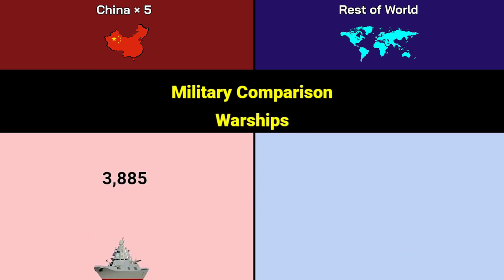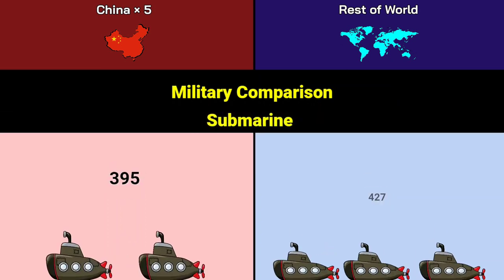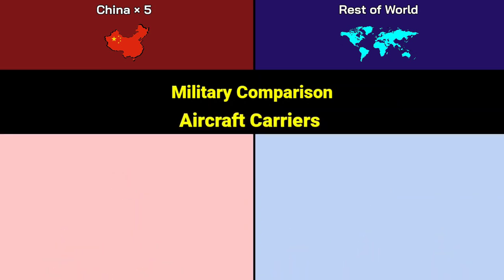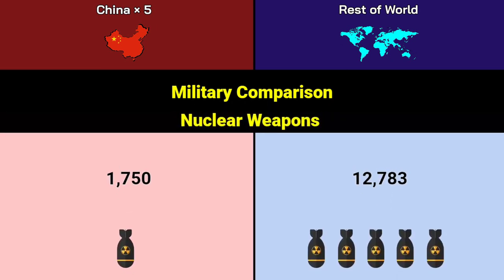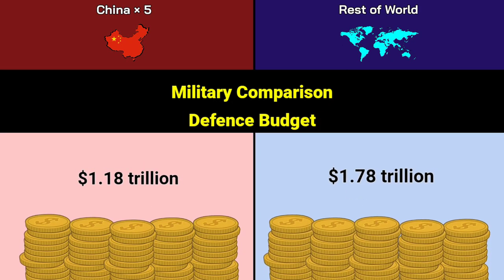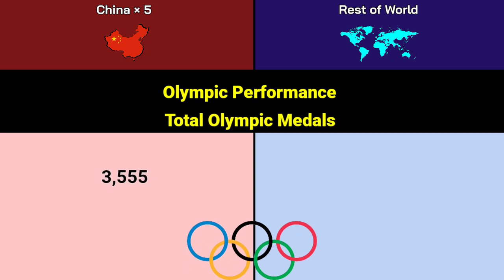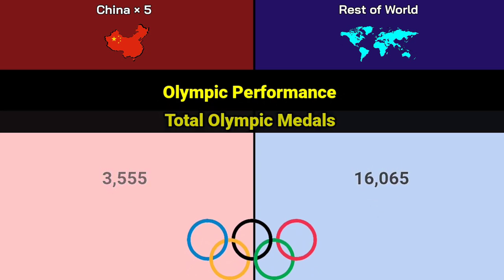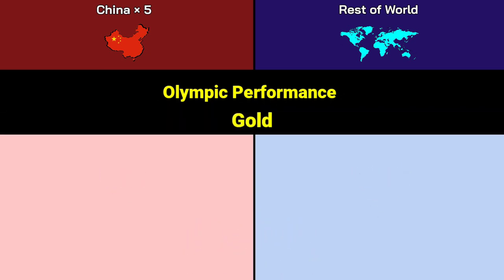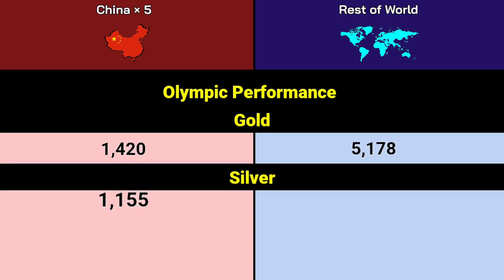Warships: China 3,885, Rest of World 8,369. Submarines: China 395, Rest of World 427. Aircraft carriers: China 10, Rest of World 19. Nuclear weapons: China 1,750, Rest of World 12,783. Defense budget: China 1.18 trillion dollars, Rest of World 1.78 trillion dollars. Olympic performance — total medals: China 3,555, Rest of World 16,065. Gold: China 1,420, Rest of World 5,178. Silver: China 1,155, Rest of World 5,192. Bronze: China 980, Rest of World 5,695.